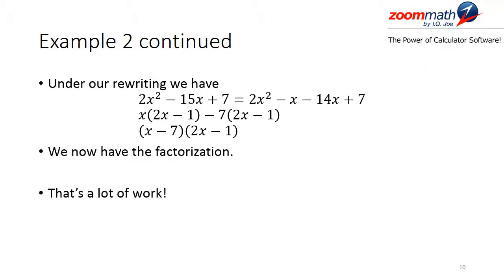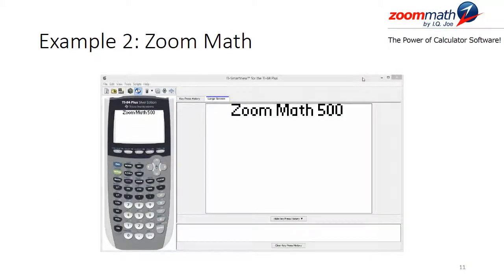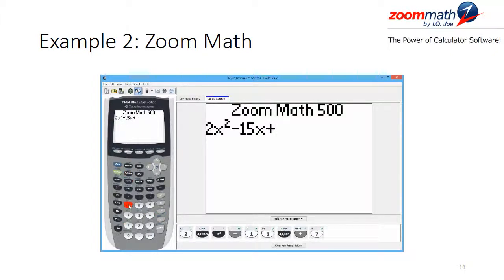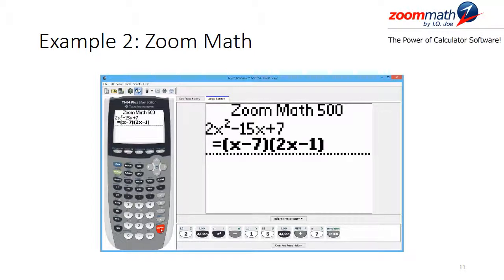That's a lot of work! Now we'll type 2x squared minus 15x plus 7 into Zoom Math. We hit enter and wait for Zoom Math to factor this expression. And here we can see the exact result we got when we did our factorization by hand.